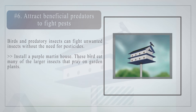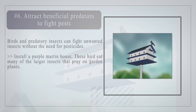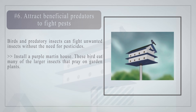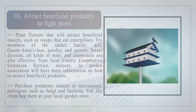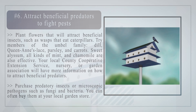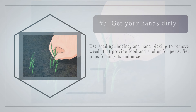Number six: attract beneficial predators to fight pests. Birds and predatory insects can fight unwanted insects without the need for pesticides. Install a purple martin house — these birds eat many of the larger insects that prey on garden plants. Plant flowers that will attract beneficial insects such as wasps that eat caterpillars; try members of the umbel family like dill, queen anne's lace, parsley, and carrots. Sweet alyssum, all kinds of mint, and chamomile are also effective. Your local county cooperative extension service, nursery, or garden association will have more information. You can also purchase predatory insects or microscopic pathogens such as fungi and bacteria at your local garden store.